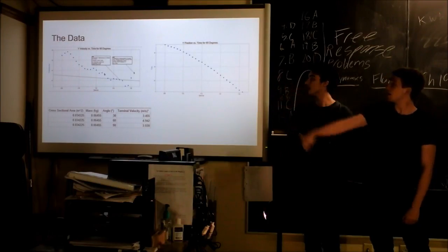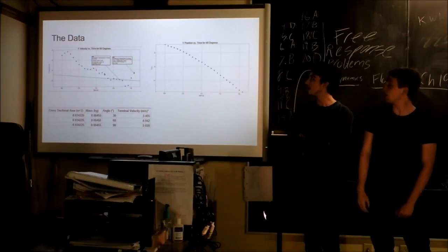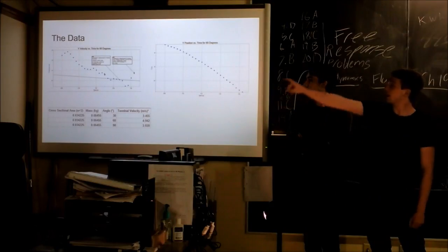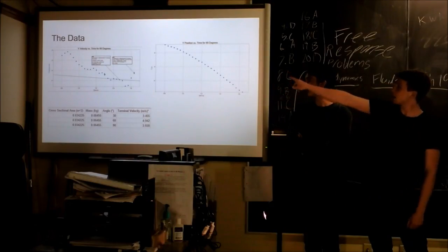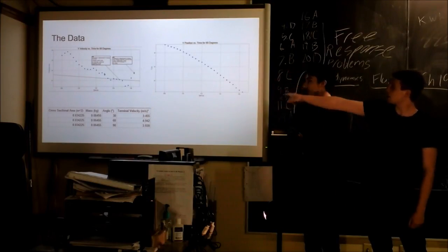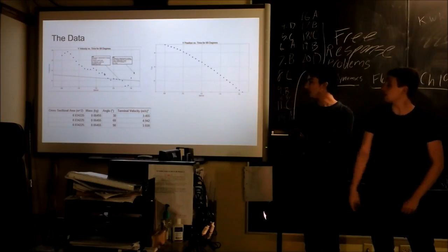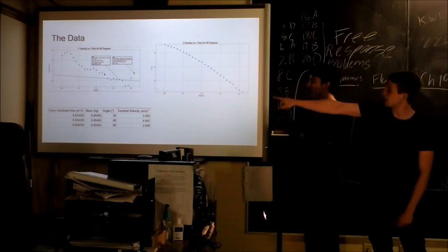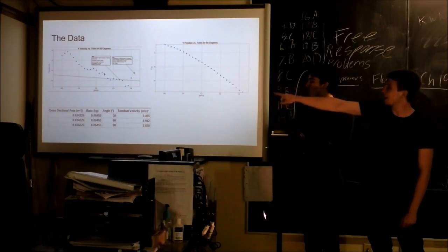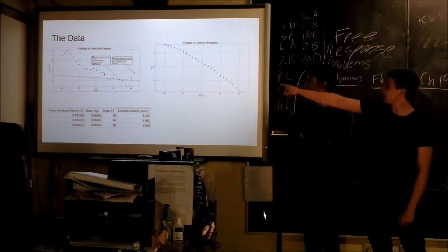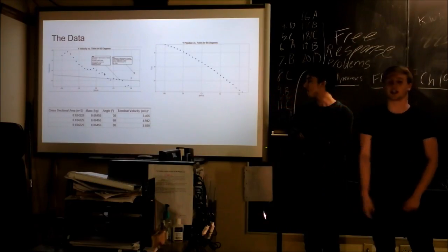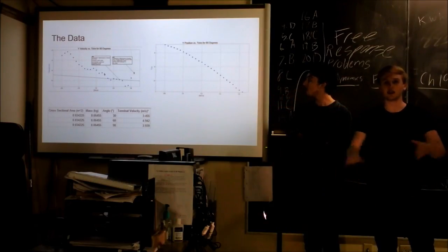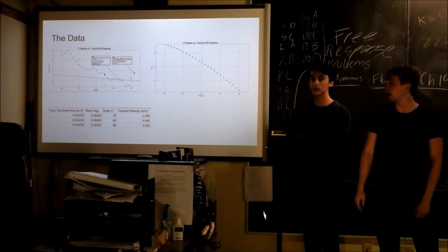This is a y-position versus time graph. You can sort of see that it's curvy, and then it gets pretty straight. These are for the same trial, and you can see that at about 1.4 seconds, a little before, it starts to get pretty linear. So that's sort of where we were coming from with that.